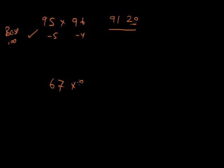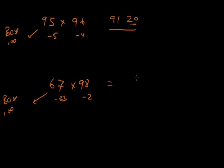Now let's make it more complicated: 67 times 98. Base is 100. 98 is 2 less than 100 and 67 is 33 less than 100. 33 times 2 is 66. Then 67 minus 2 is 65. So 67 times 98 equals 6566.